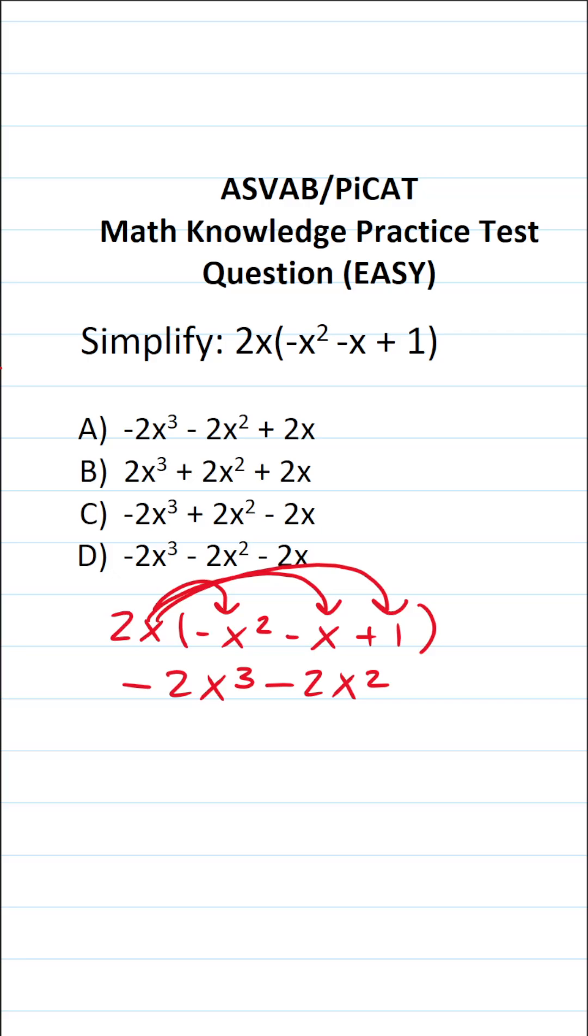And then finally, we have 2x times 1. Anything times 1 is just itself. So 2x times 1 is just 2x. So our answer is going to be negative 2x to the third minus 2x squared plus 2x. And we can see that that is answer choice A.